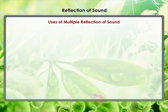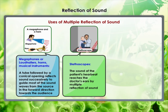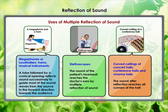Uses of Multiple Reflection of Sound. Megaphones, loud hailers, horns, and musical instruments such as trumpets are all designed to send sound in a particular direction without spreading it in all directions. In these instruments, a tube followed by a conical opening reflects sound successively to guide most of the sound waves from the source in the forward direction toward the audience. A stethoscope is a medical instrument used for listening to sounds produced within the body — chiefly the heart or lungs — where sound reaches the doctor's ears by multiple reflection. Generally, the ceilings of concert halls, conference halls and cinema halls are curved so that sound after reflection reaches all corners of the hall. A curved sound board may also be placed behind the stage so that sound spreads evenly across the width of the hall.